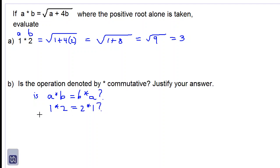Let's find out what 2 star 1 is. 2 star 1 would be equal to, using the same formula, square root of a plus 4b. So a equals 2 and b equals 1. Substituting, we have the square root of 2 plus 4 times 1, which is 4. This equals the square root of 2 plus 4, which is the square root of 6.